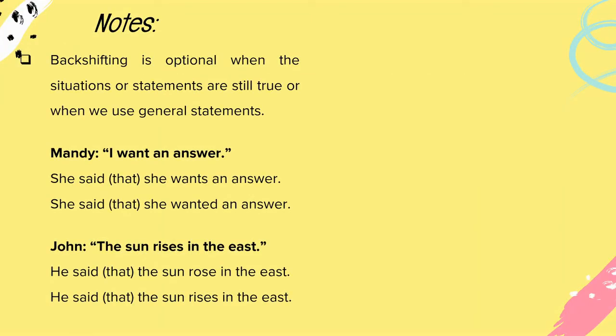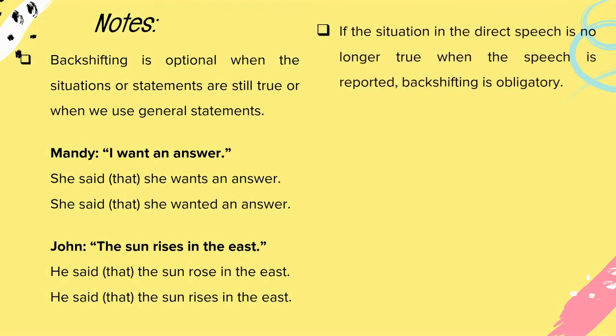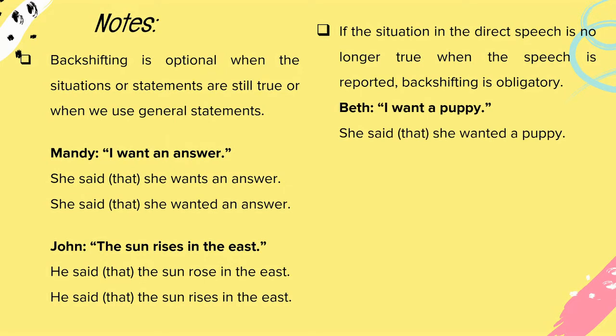Backshifting is optional when the situations or statements are still true, or when we use general statements. For example: Mendy — 'I want an answer' — she said that she wants an answer, or she said that she wanted an answer. John — 'The sun rises in the east' — he said that the sun rose in the east, or he said that the sun rises in the east. If the situation in the direct speech is no longer true when the speech is reported, backshifting is obligatory. So: Beth — 'I want a puppy' — she said that she wanted a puppy.